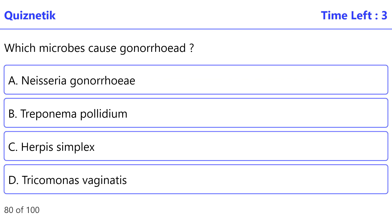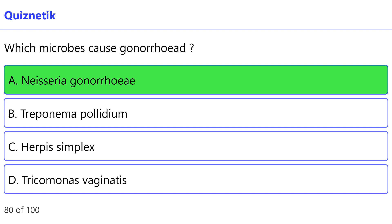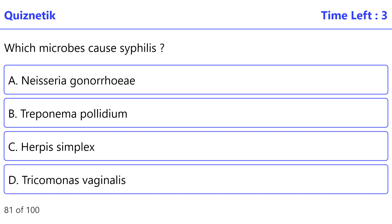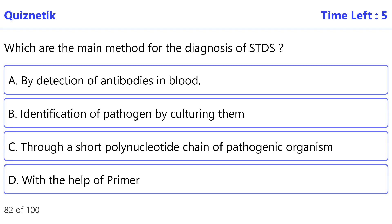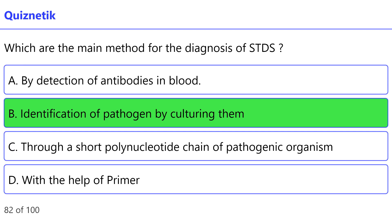Which microbes cause gonorrhea? The correct option is A: Neisseria gonorrhoeae. Which microbes cause syphilis? The correct option is B: Treponema pallidum. Which are the main methods for the diagnosis of STDs? The correct option is B: Identification of pathogen by culturing them.